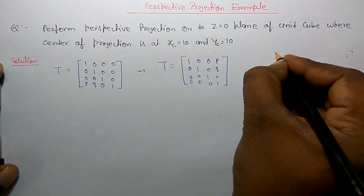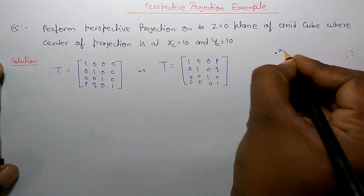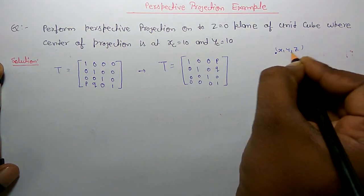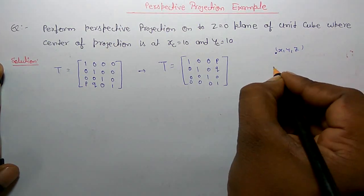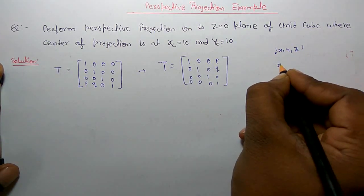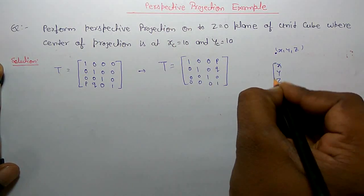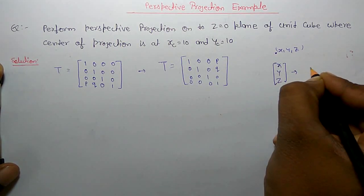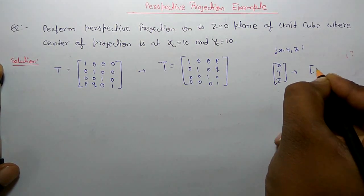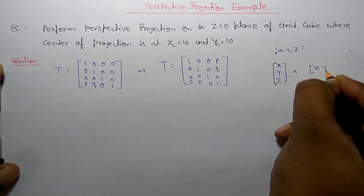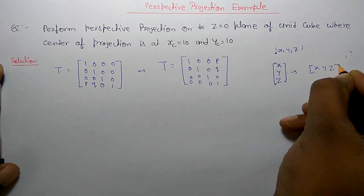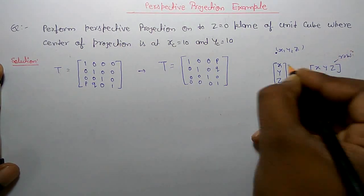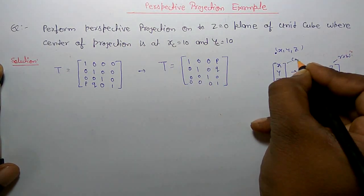So if there is a point X, Y and Z — if you want to represent in column measure order you will represent in this way. If you want to represent in row measure order you will represent in this way. This is row measure order, this is column measure order.